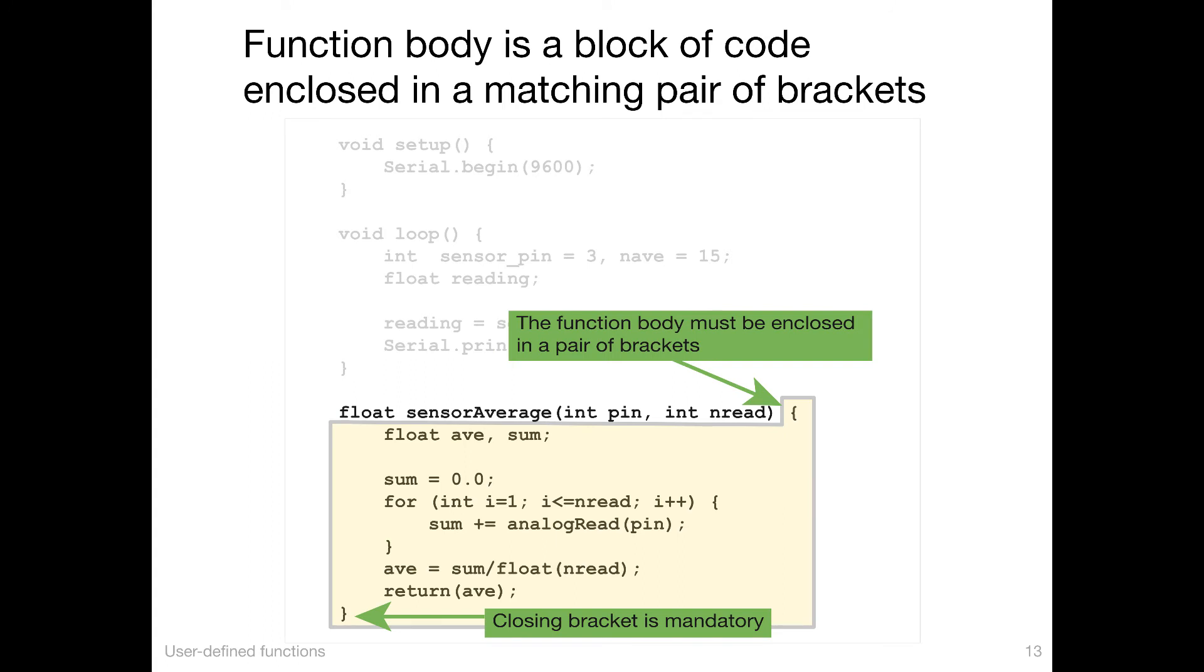The yellow box defines the range of statements that are inside the function called sensorAverage. We call this the body of the function. And the body is delineated by curly brackets, an open curly bracket at the start and a closed curly bracket at the end. Of course, we can have loops and other things that use curly brackets inside, but the outermost brackets define the body of the function.